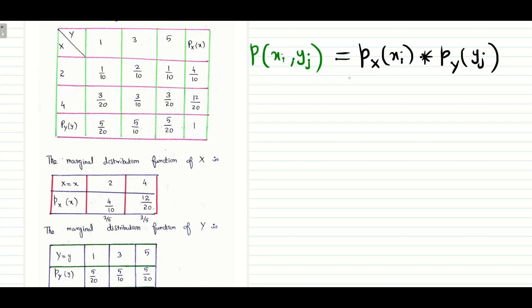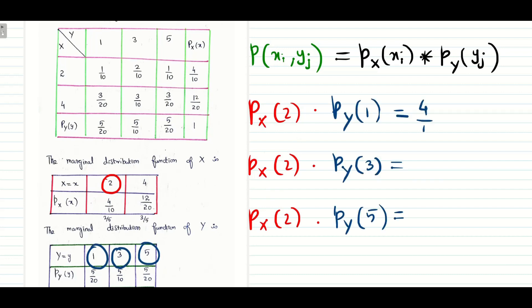Now let us take from the RHS, Px of 2. I am fixing this to Px of 2. Now for the fixed value of 2, we are going to apply the value of Y. Let us calculate the values: 4 by 10 times 5 by 20, 4 by 10 times 5 by 10, 4 by 10 times 5 by 20.